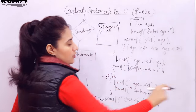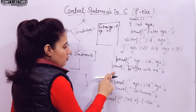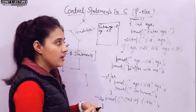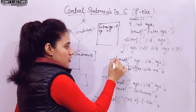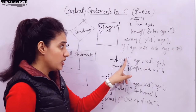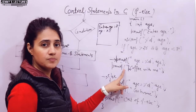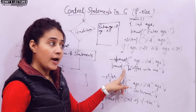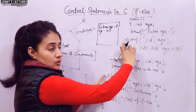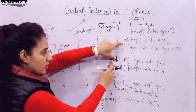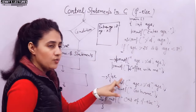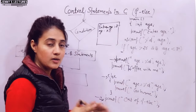Another common error: if you don't write curly braces for the if block containing multiple statements, by default only the first line after 'if' is considered part of the if block. The second statement becomes part of the program, not the if block. When 'else' appears after that second statement, the compiler gives 'misplaced else' because else must come directly after the if block.